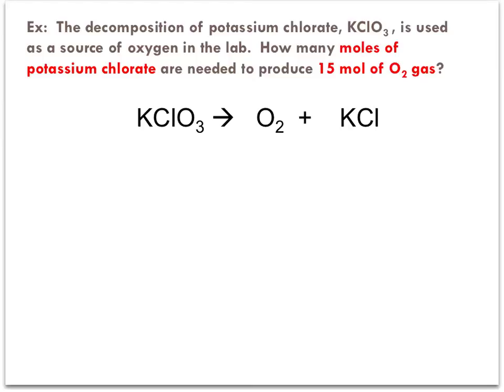This example says, the decomposition of potassium chlorate, KClO3, is used as a source of oxygen in the lab. How many moles of potassium chlorate are needed to produce 15 moles of oxygen gas? The equation is shown as potassium chlorate decomposing into oxygen plus potassium chloride, a metal chloride, which follows the rules of decomposition, as already stated. Here's the balanced chemical equation.